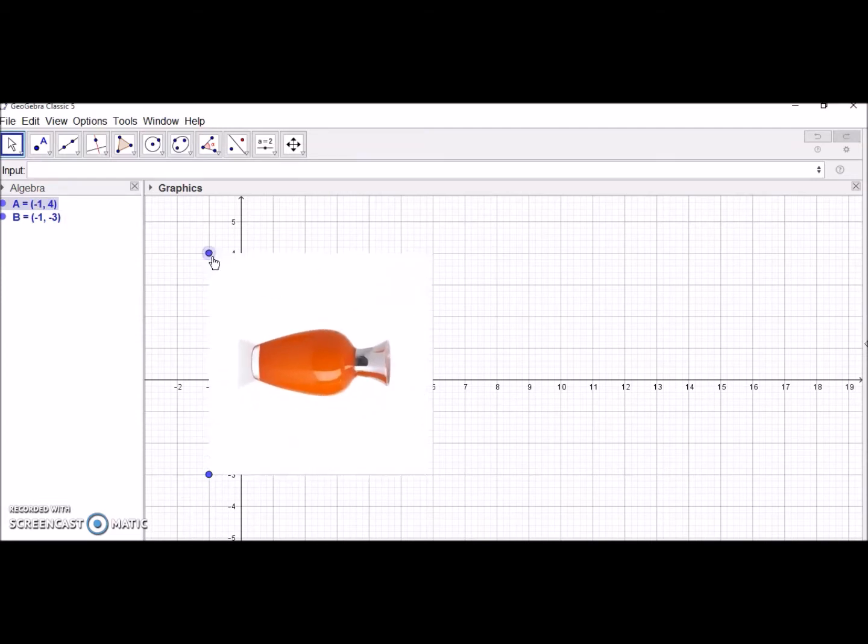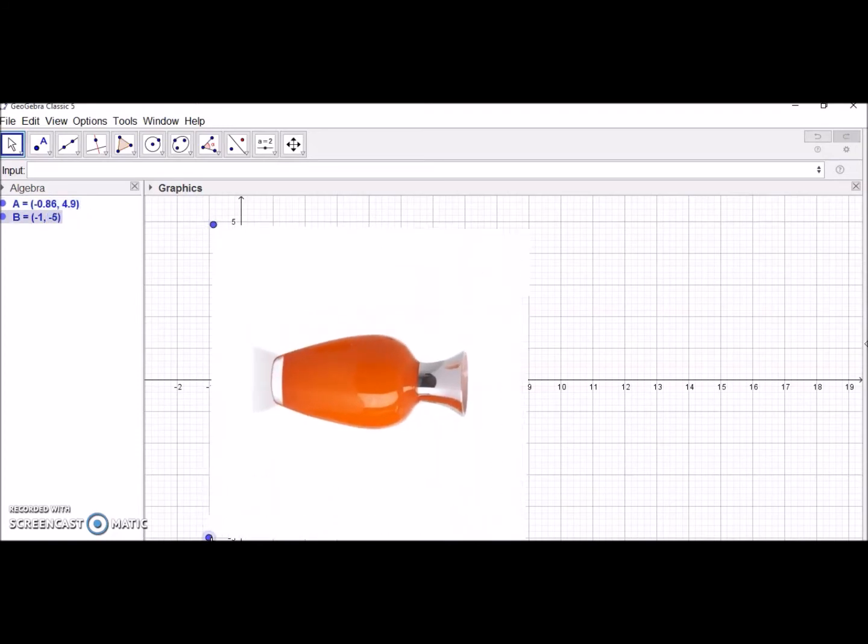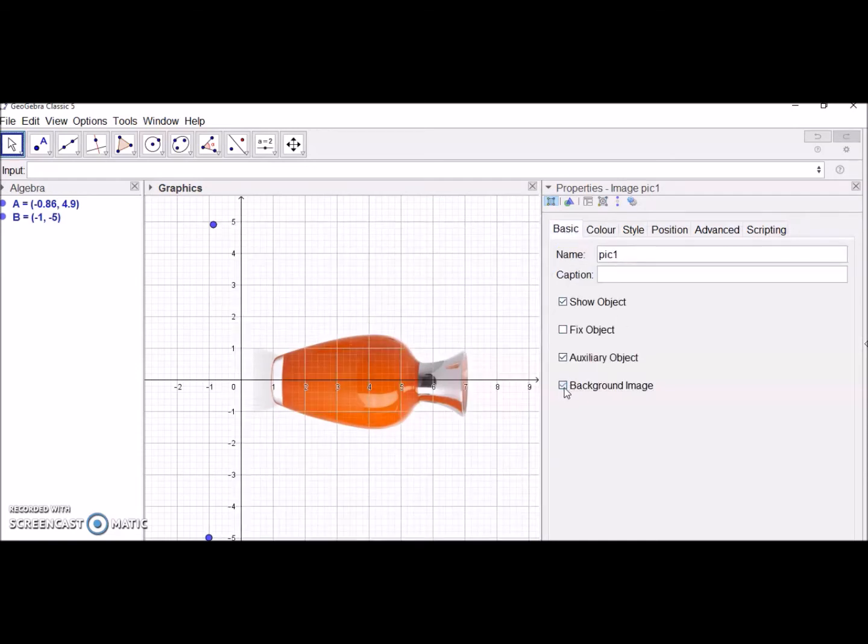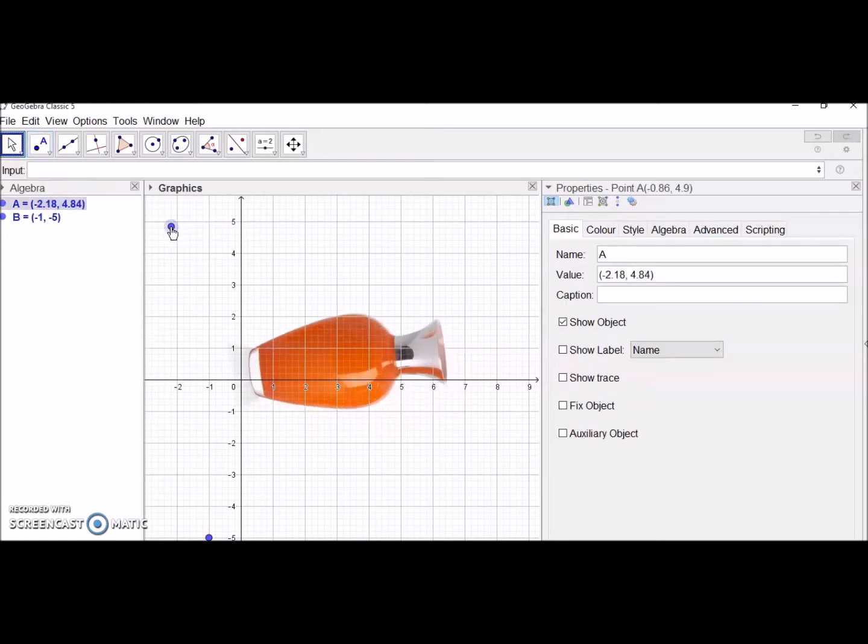Based on its size, you can drag your points to adjust your image. Then we'll put this image as a background. Click on object properties, go to basics, and click on background image so you can see the coordinates and axes properly.